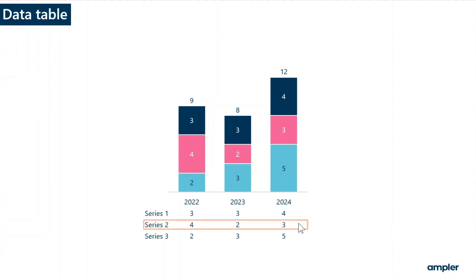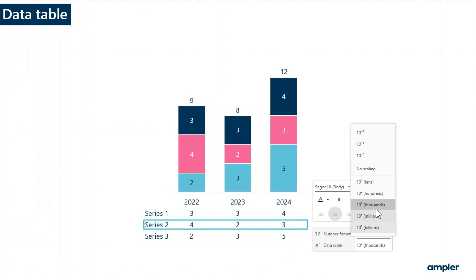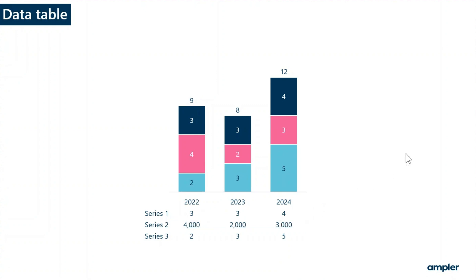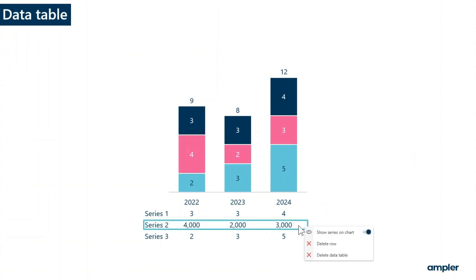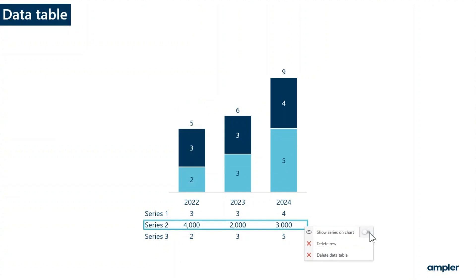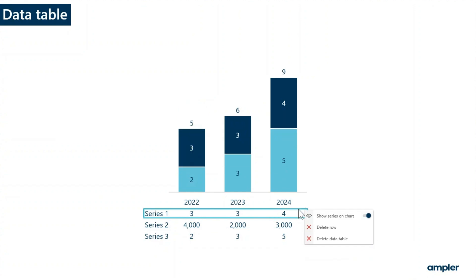However, when changing the data scale from the data table, the chart is not updated. Right click on a row to have the context menu shown. From the menu, you can select to toggle off show series and chart. You can delete a row or delete the full data table.